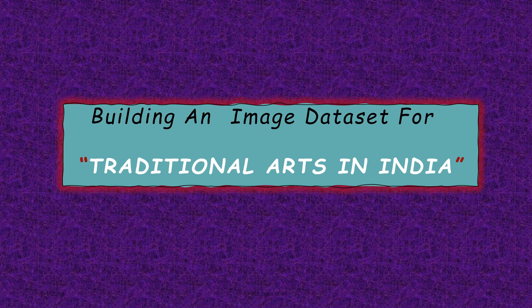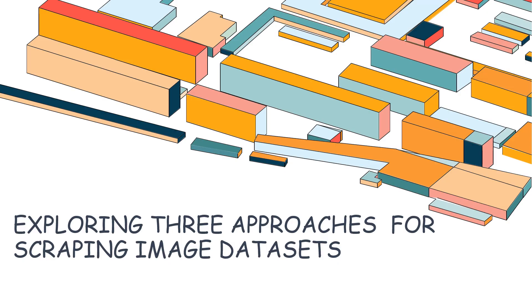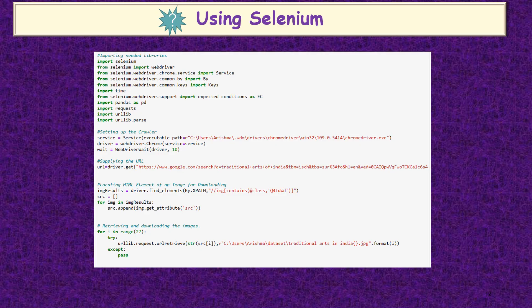Next, we do some implementation. Here, I am building an image dataset for the title Traditional Arts in India. I am interested to scrape the dataset in three different ways. The first method is using Selenium. Selenium is an open source tool that automates web browsers and is one of the web scraping approaches. Here you can see the Python code for downloading images using Selenium. First, I imported the needed libraries, then I set up the crawler. The crawler is used to crawl different URLs to download images. Then I supplied the specified URL — my intention is to scrape images based on the title Traditional Arts in India. Then I collected the HTML elements of the images to download, and finally collected the scraped data into a local directory.